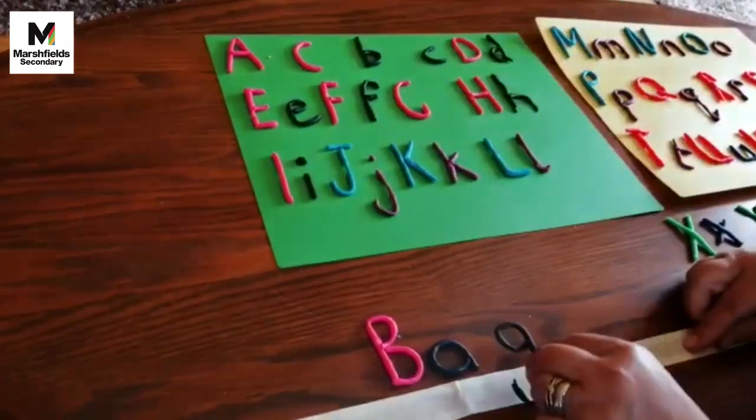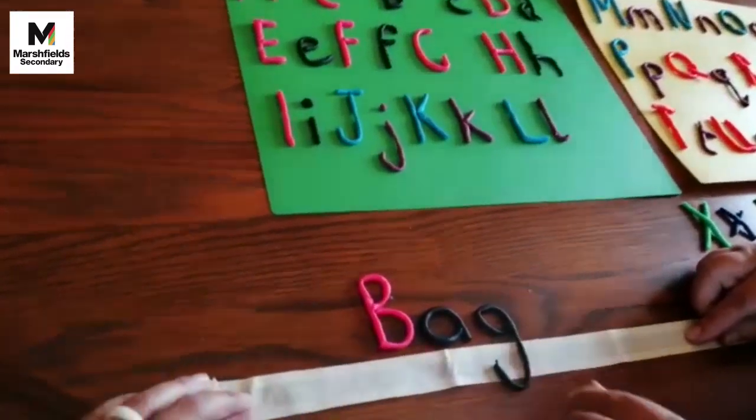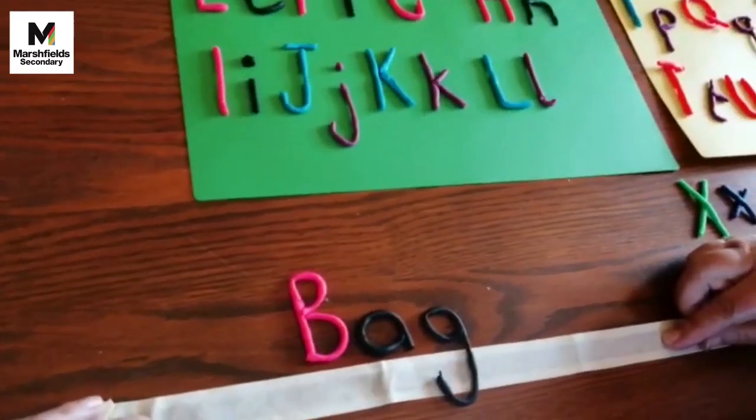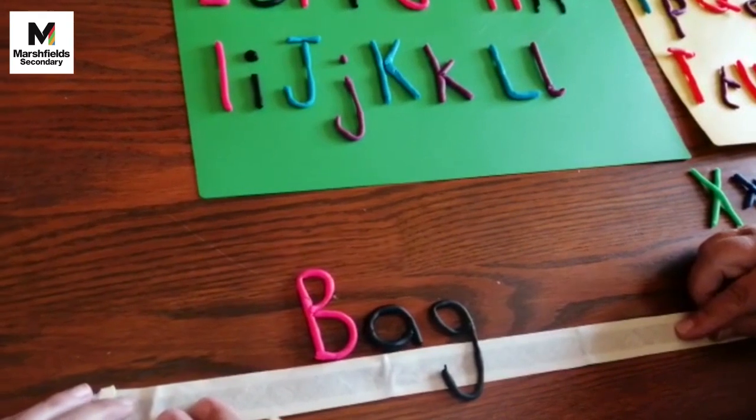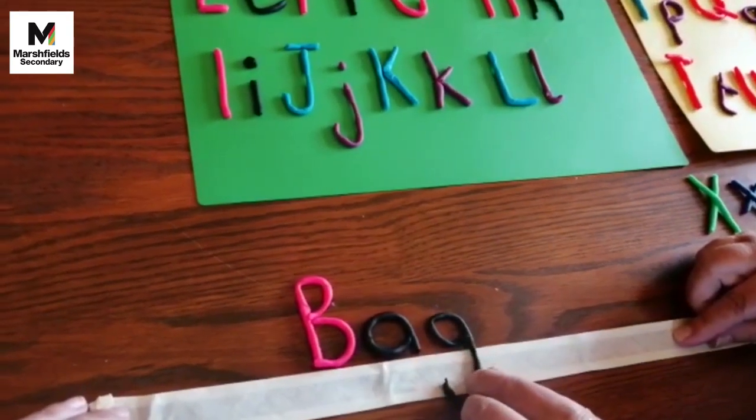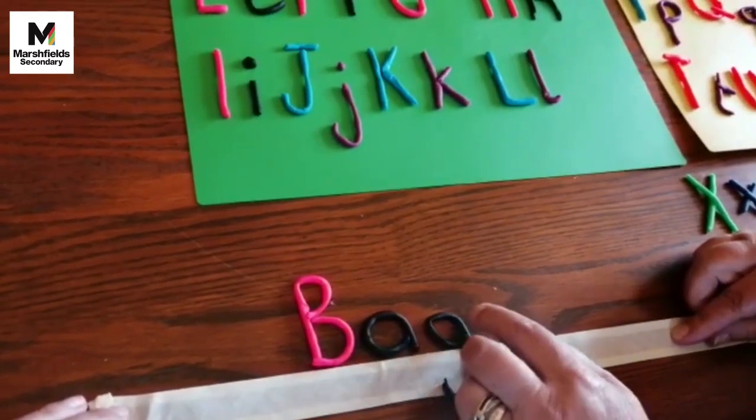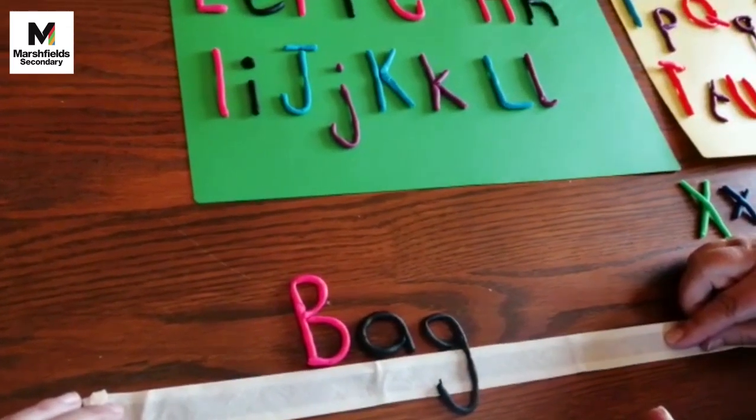So I'm going to do one more and this time we've got 'bag.' Now can you see how the G sits on the line and then hangs that tail down?